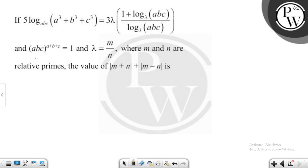The first task is what we do here. What is given? (abc)^(a+b+c) = 1. This means we can find out that a + b + c equals...